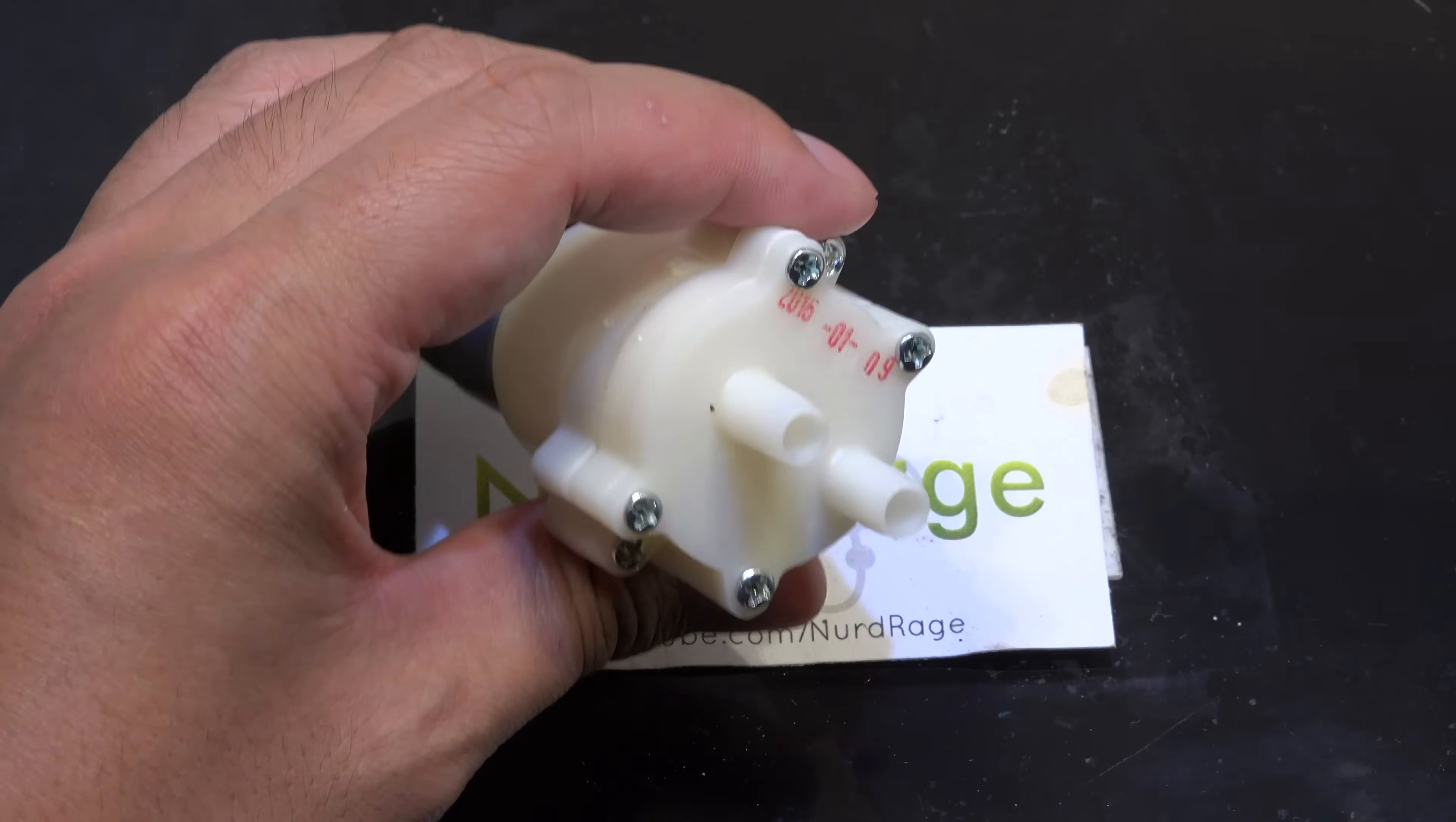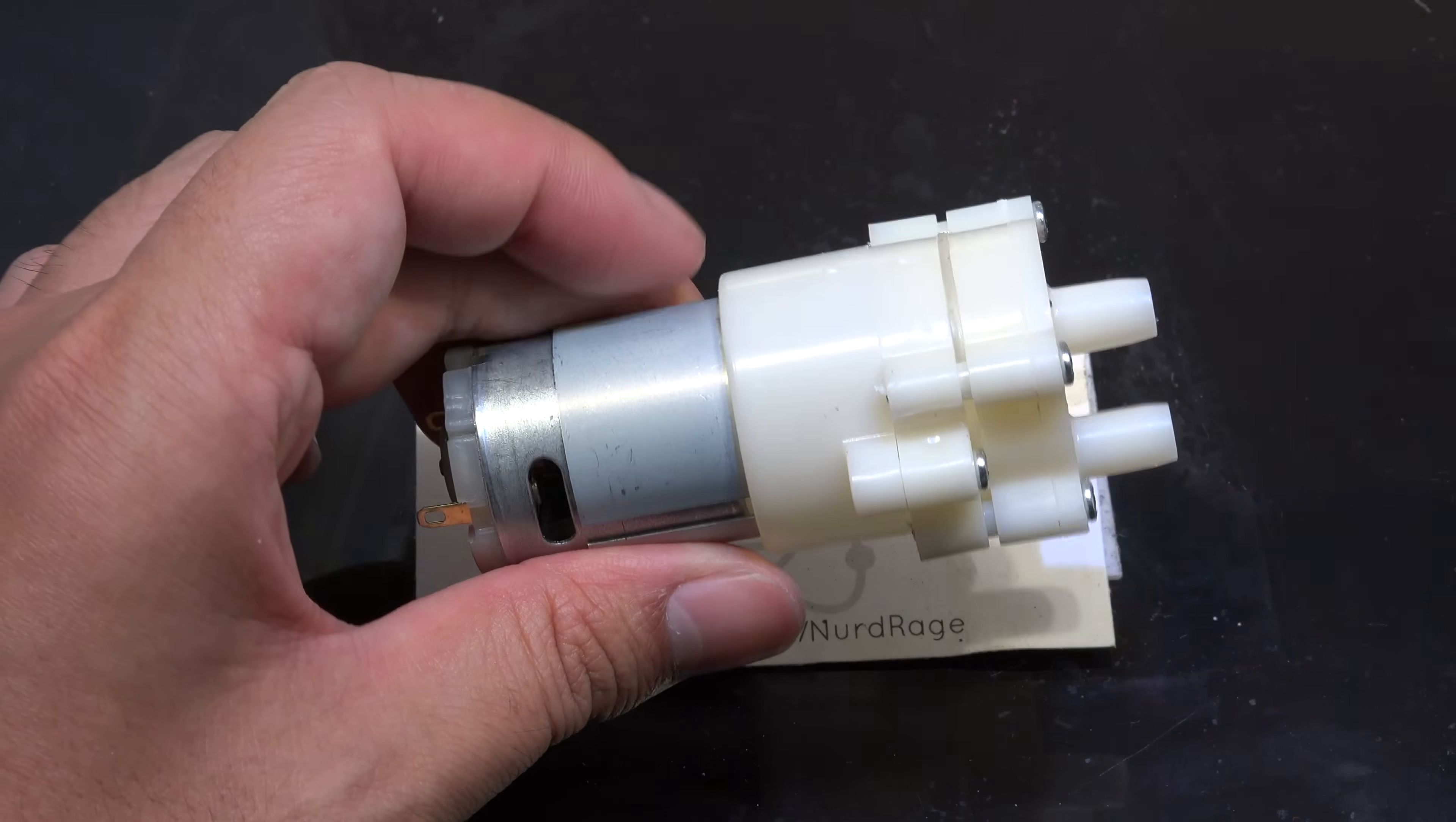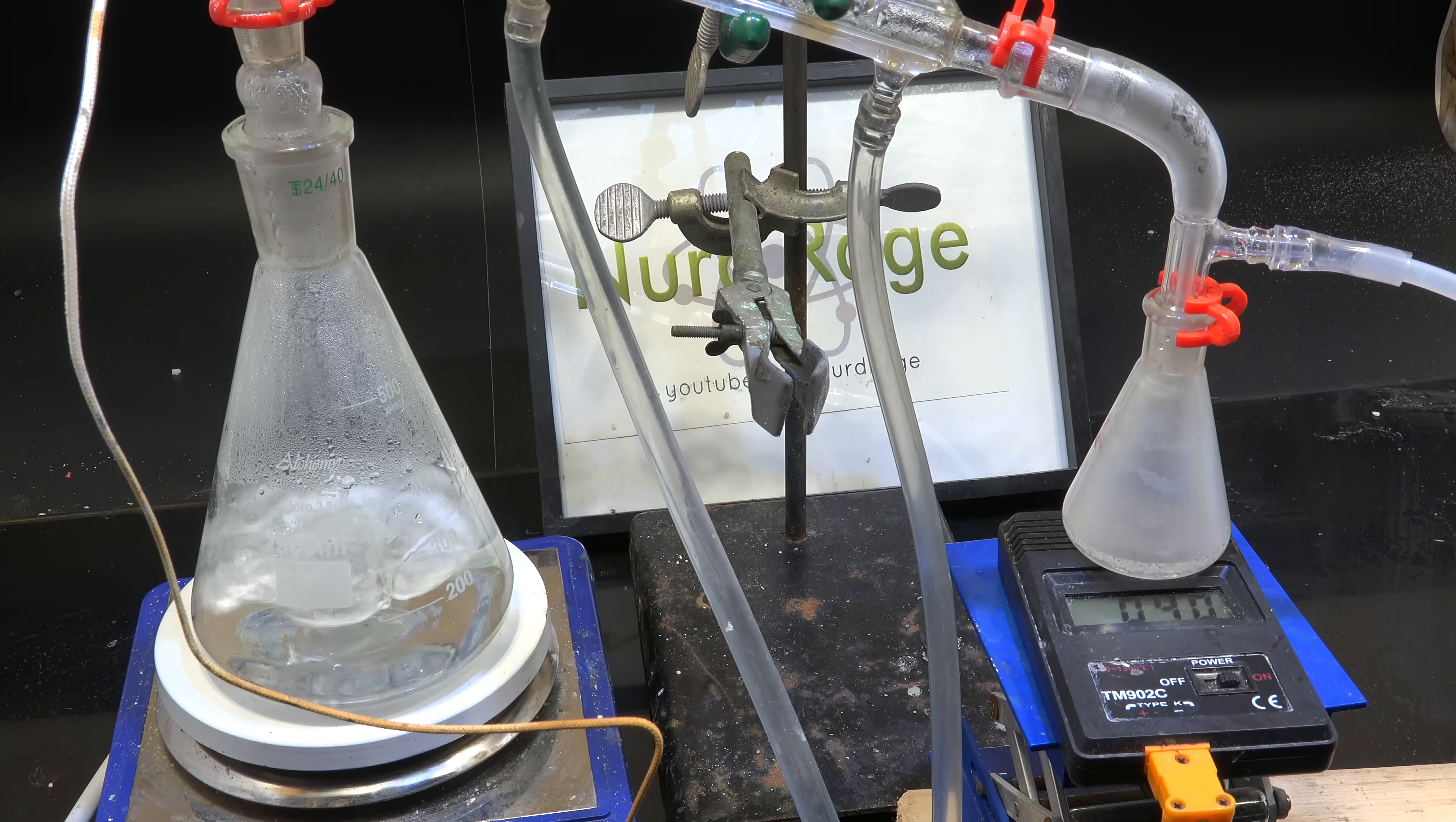Greetings fellow nerds. A vacuum pump is an optional but extremely useful thing to have in a chemistry lab. You can use it for vacuum filtration, drying chemicals, and for changing the boiling points of solvents in distillations.